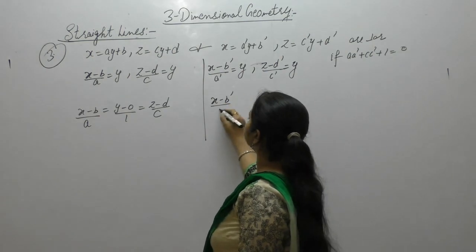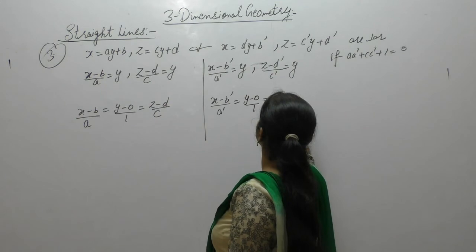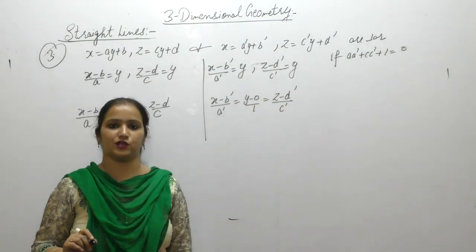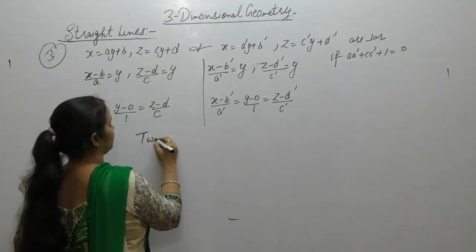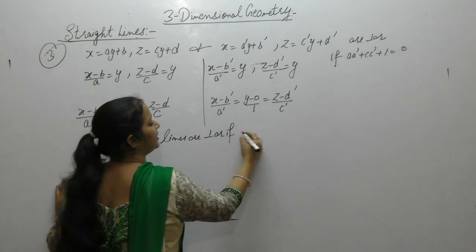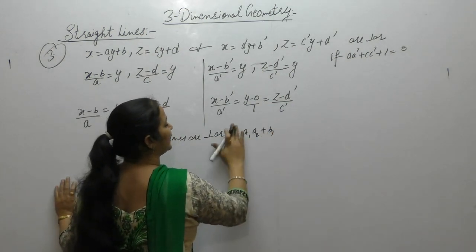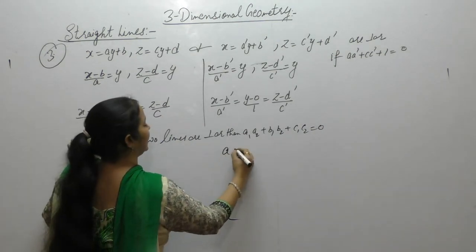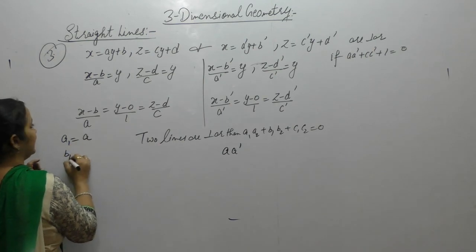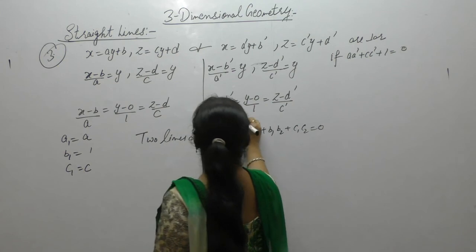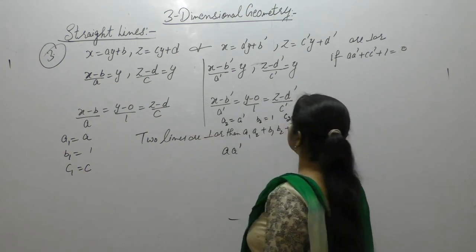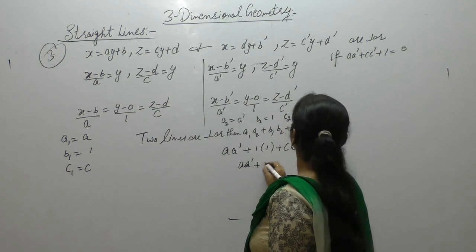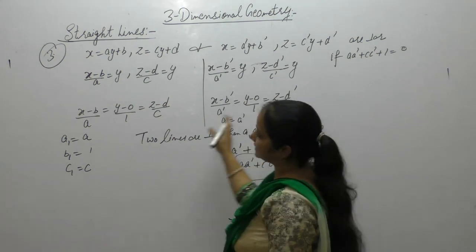Similarly, the second line is (x−b')/a' = y/1 = (z−d')/c'. Two lines in Cartesian form are perpendicular if a1·a2 + b1·b2 + c1·c2 = 0. Here a1=a, a2=a', b1=1, b2=1, c1=c, c2=c'. Therefore a·a' + 1·1 + c·c' = aa' + cc' + 1 = 0, proving the lines are perpendicular.